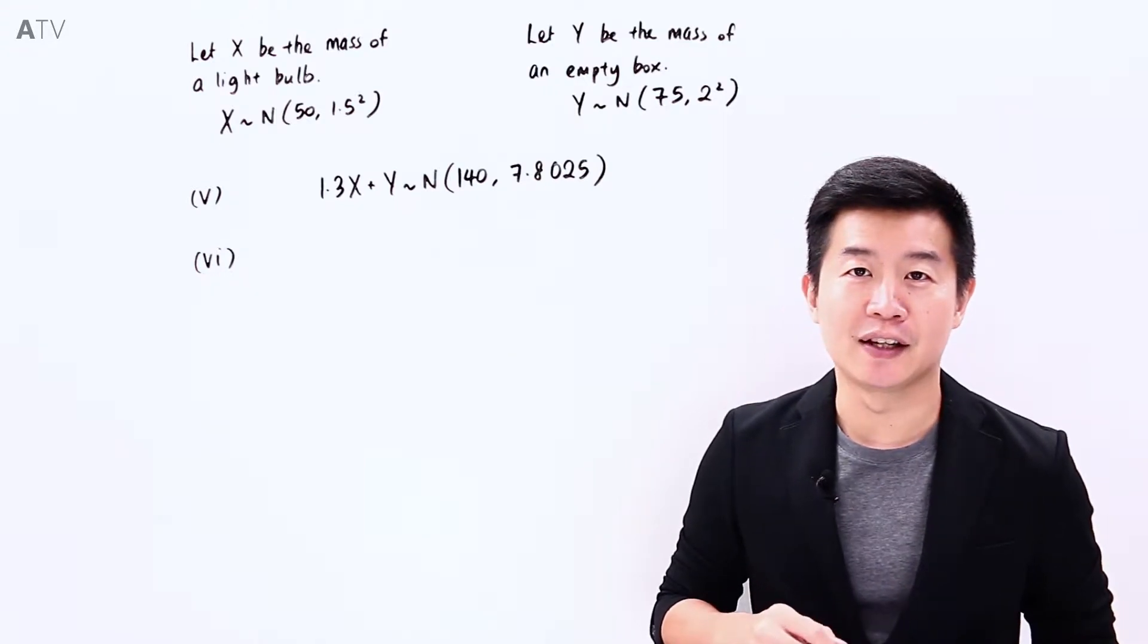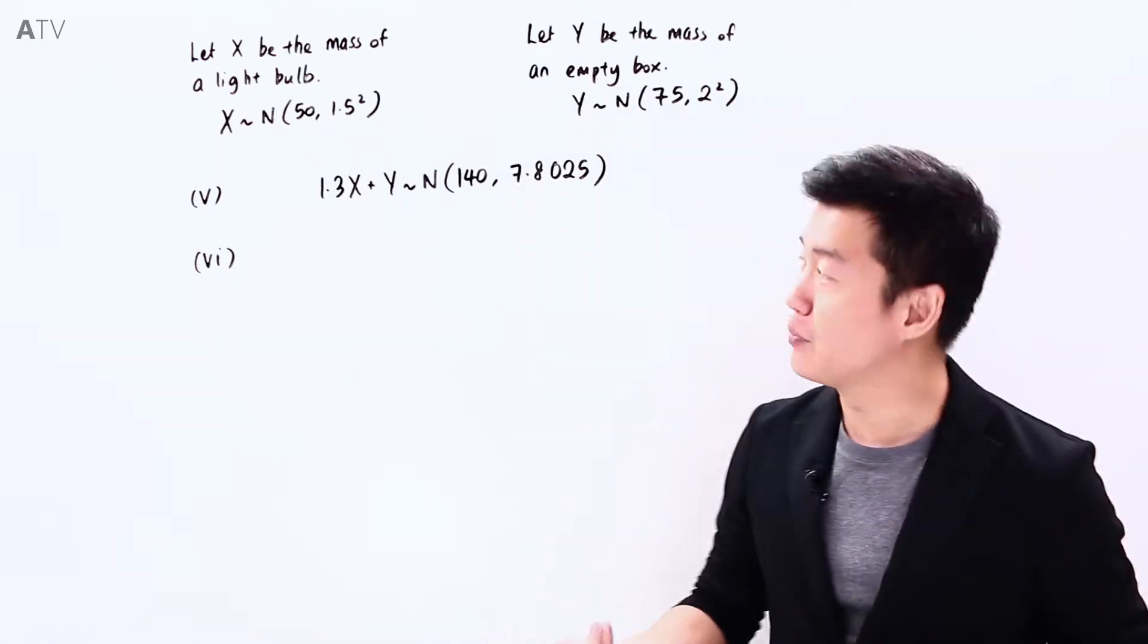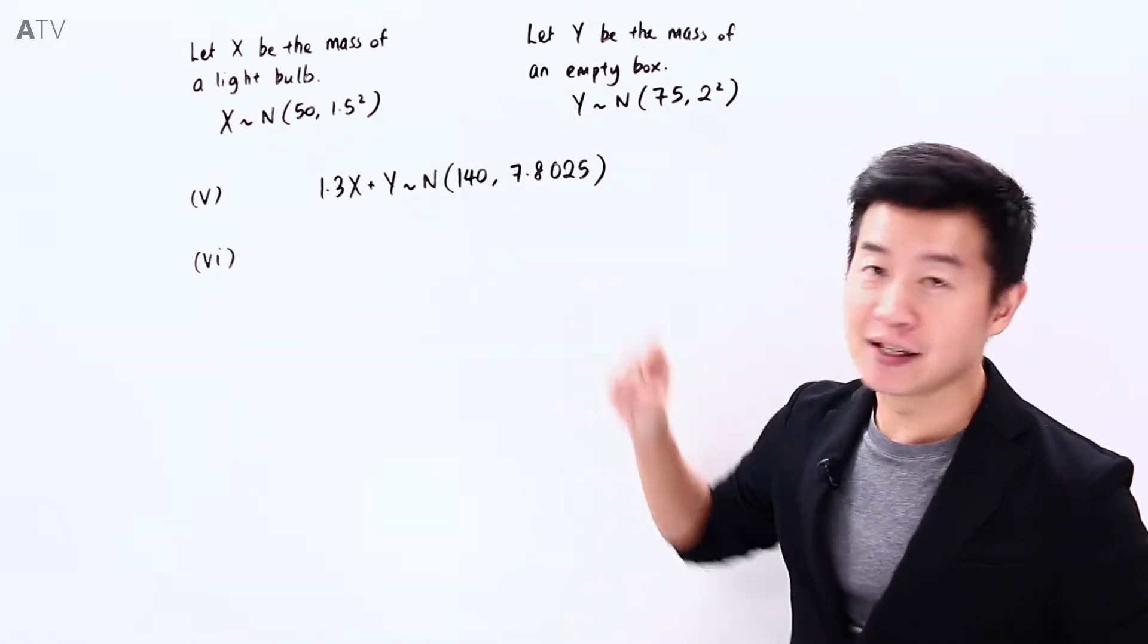From the previous part, we have looked at the total mass of the light bulb, an empty box, and its padding, and the distribution is this.